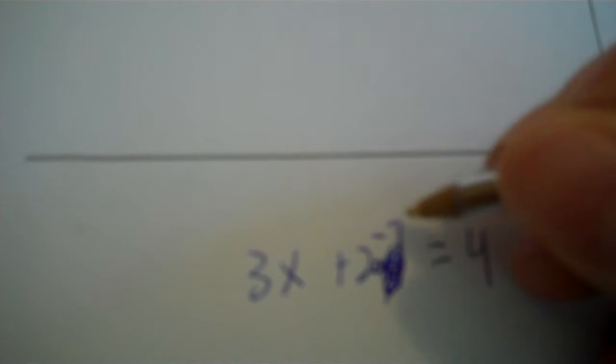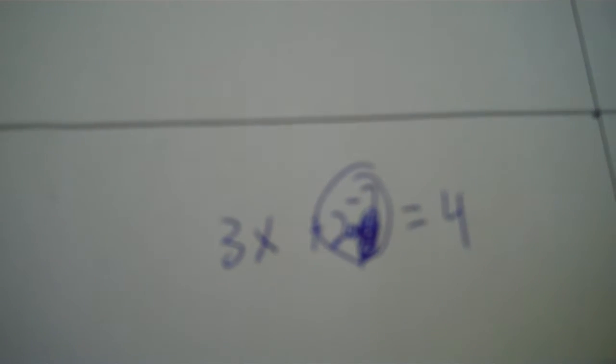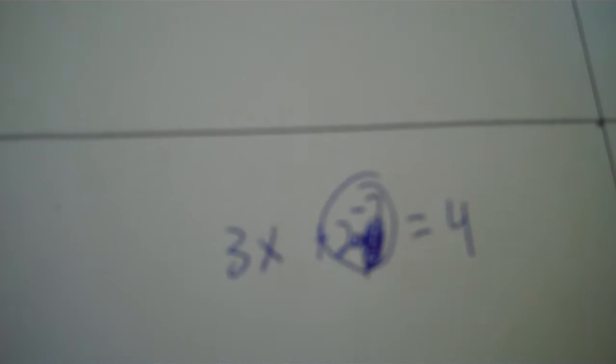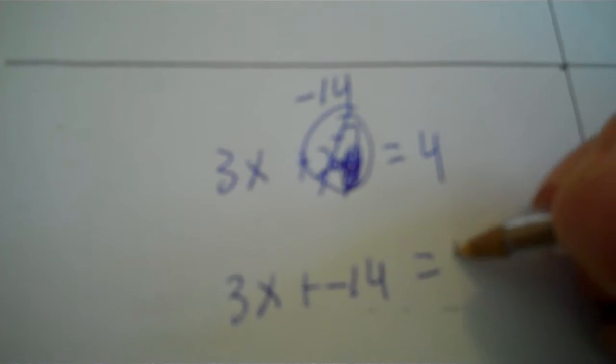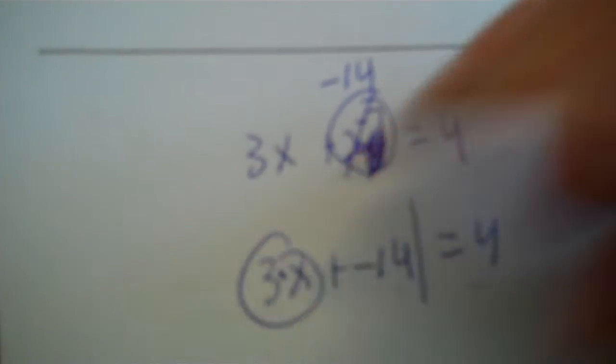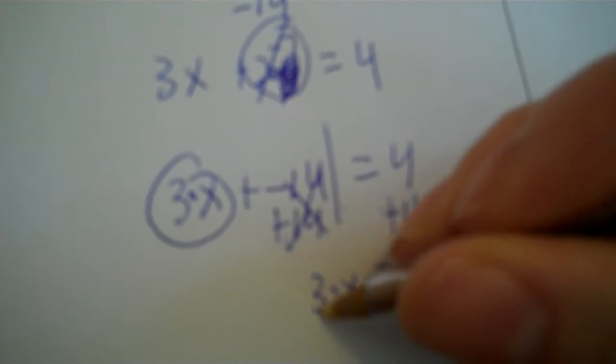Now use your first equation. 3x plus 2y equals 4. Negative 7 goes in for y. So you put a times dot. Now you have negative 7. So first thing you have to do is multiply 2 and negative 7. 2 times negative 7 is negative 14. So we have 3x plus negative 14 equals 4. So you add 14. 4 plus 14 is 18.